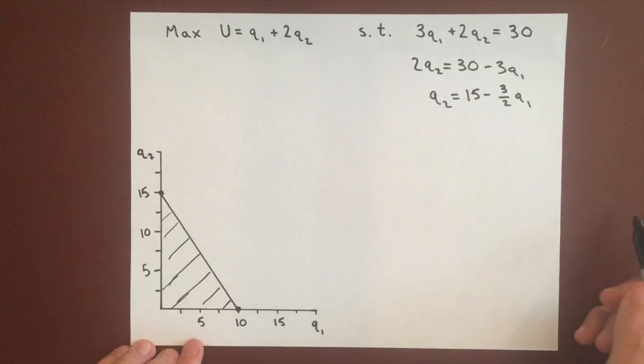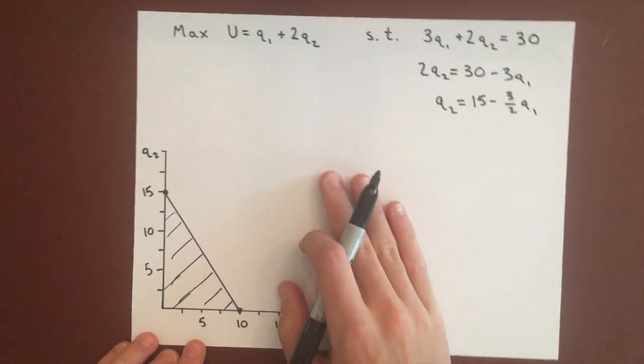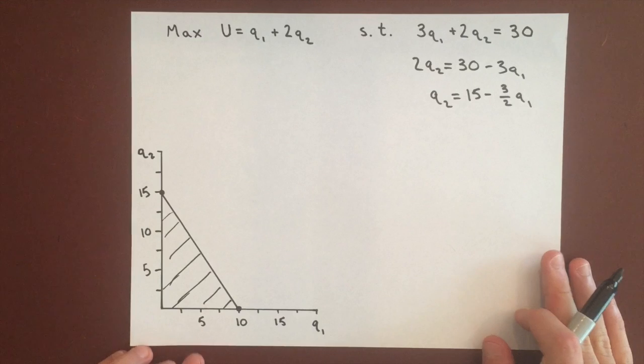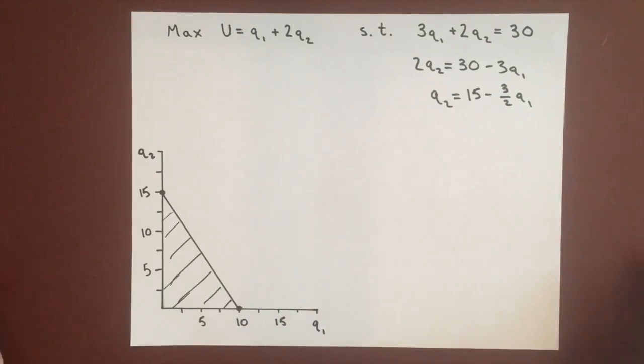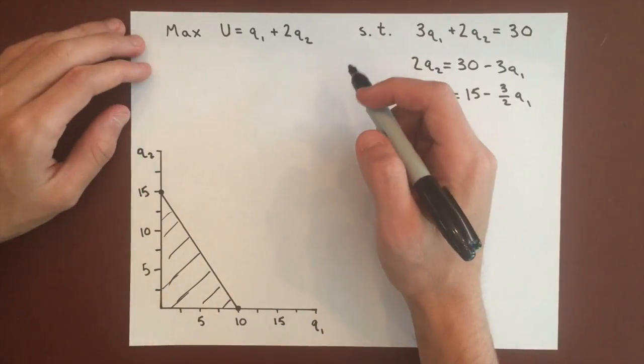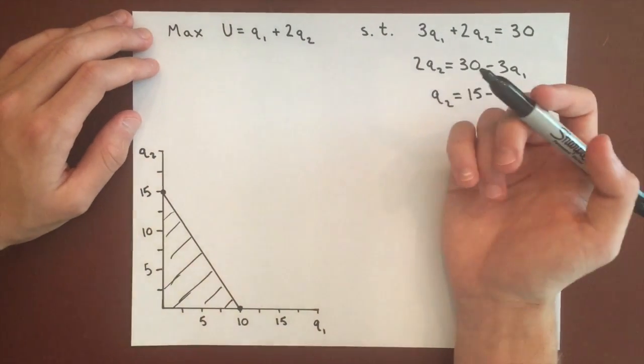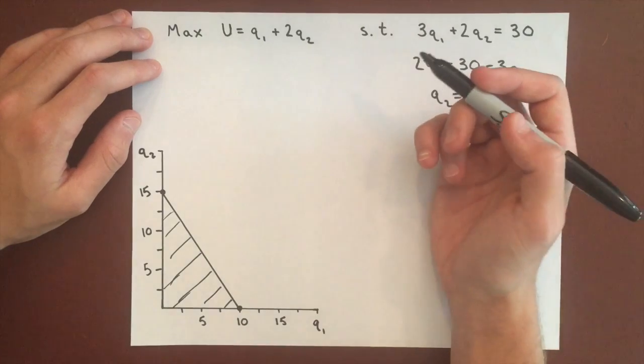We know indifference curves farther from the origin are the ones that give us the most utility, so we'll just graph some of these and see which combination of Q1 and Q2 gives us the best utility.